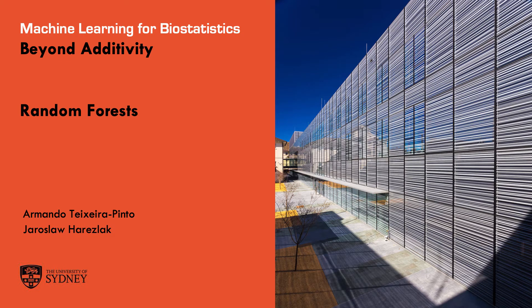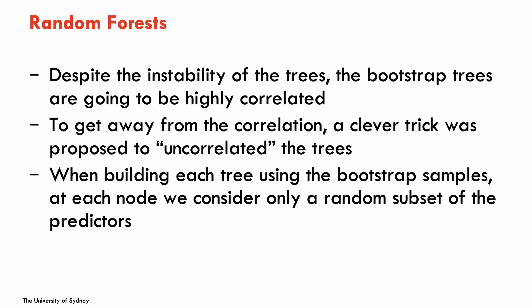Random forests are very similar to bagging. If you recall in the last video, we talked about bagging. Bagging was the process where we bootstrap our original sample, create all these bootstrap samples, and for each sample we grow a tree. Then to get predictions, we get predictions from each one of the trees built on the bootstrap samples and we average all those predictions. This is the prediction from the bagged trees.